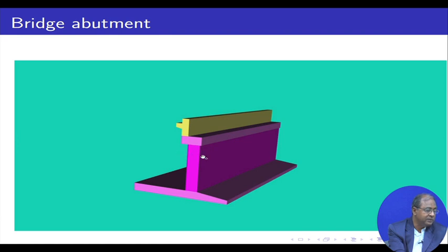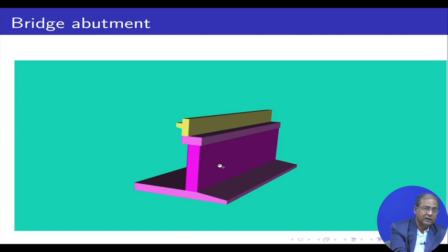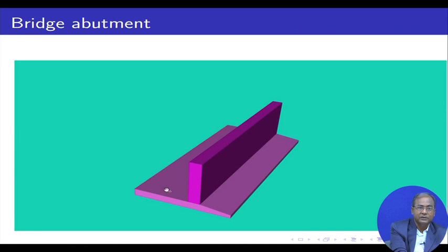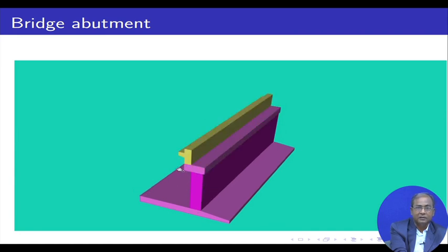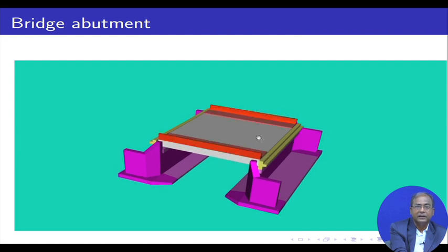The objective here is: how shall we decide this dimension and the reinforcement? Whatever bending moment and shear force come, how shall we decide these dimensions so that the structure will be safe and will stand? We consider the base, stem, and dirt wall, and finally the slab, and then the whole thing that you are getting here.